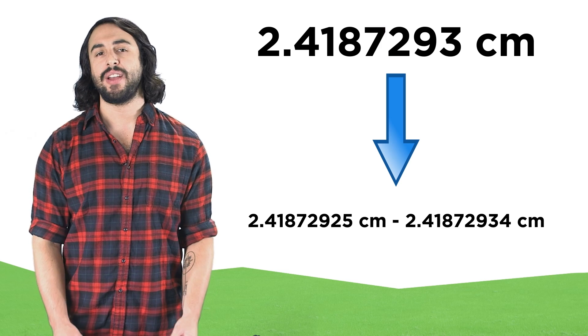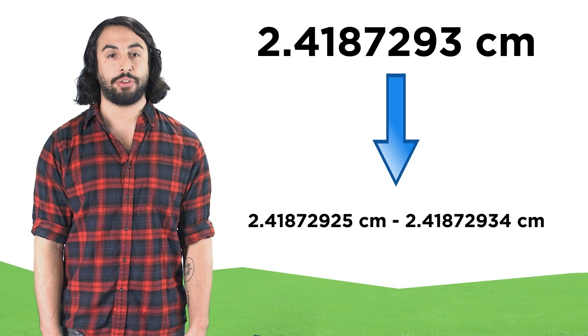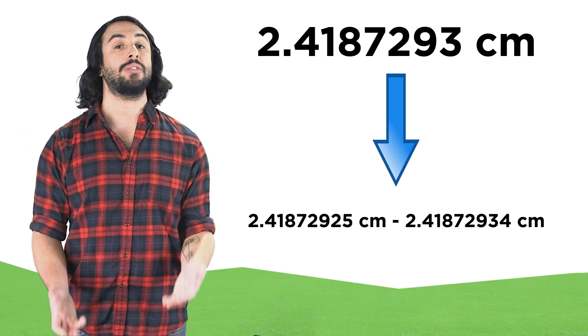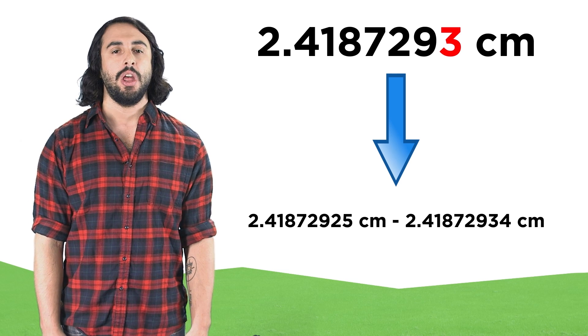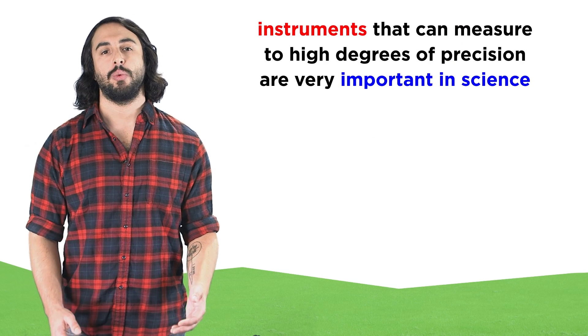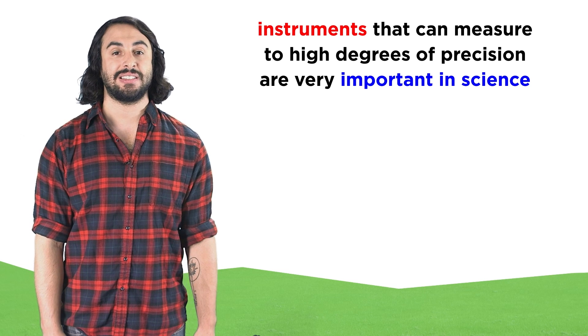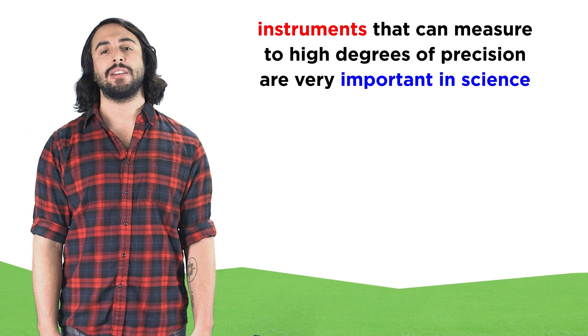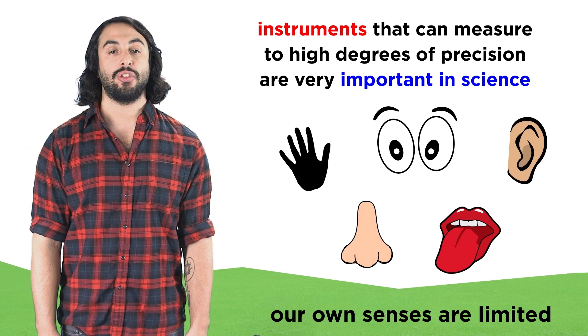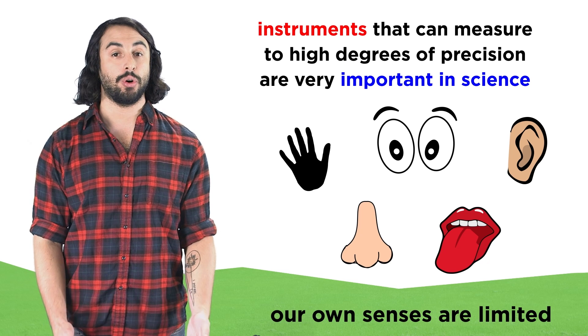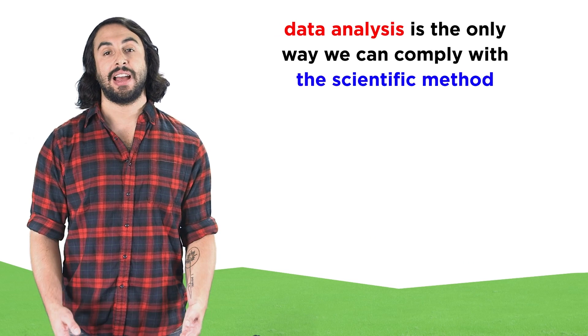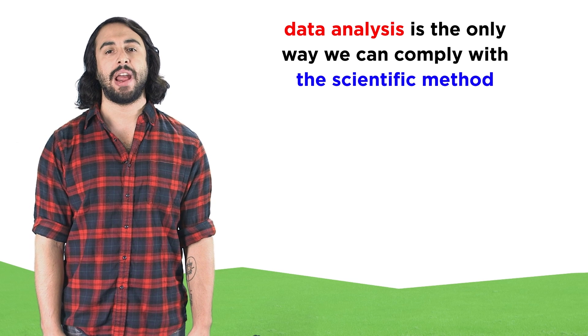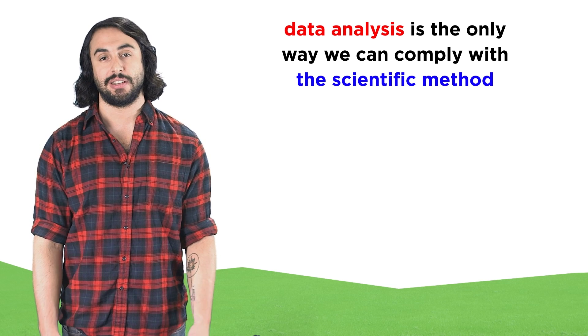Even if it was two point four one eight seven two nine three centimeters, there is still uncertainty associated with that final digit. The precision associated with measurement is an important concept to understand, because we are limited by our five senses in the way that we interact with the world, and therefore in how we do science, since analysis of the data we collect is the only way we can do science in the first place.